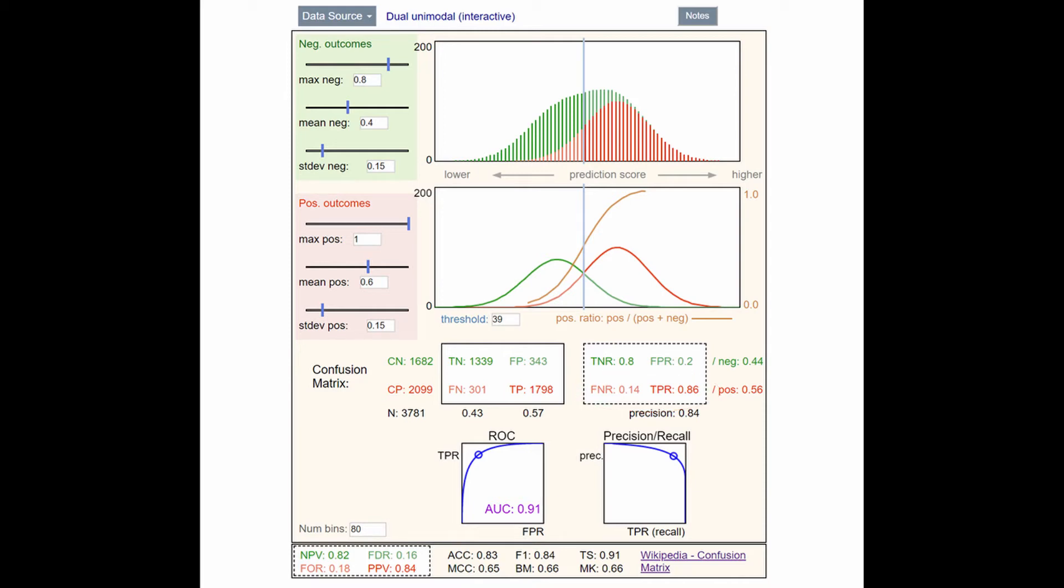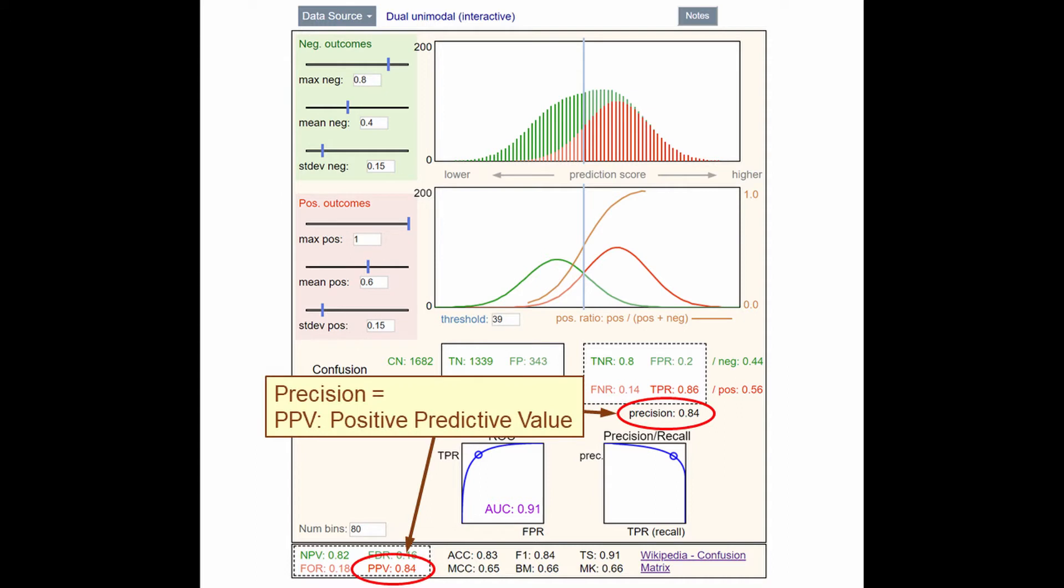There is one more table of ratios that is useful as well. These are called conditional use measures. The conditional use measures normalize counts not by outcomes, but by predictions. The negative predictions are in the left column, and the positive predictions are in the right column. The most popular conditional use measure is precision. Another name for precision is PPV, or positive predictive value.